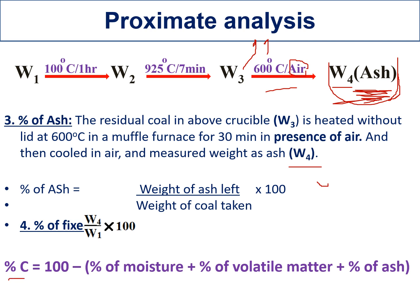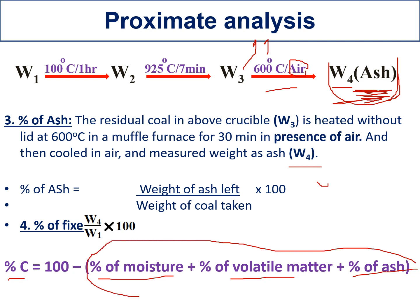Once you know the percentage of moisture, percentage of volatile matter, and percentage of ash, add all three and subtract from 100 to get the percentage of fixed carbon. No additional operation is needed for fixed carbon — it is simply 100 minus the total of the other three percentages.